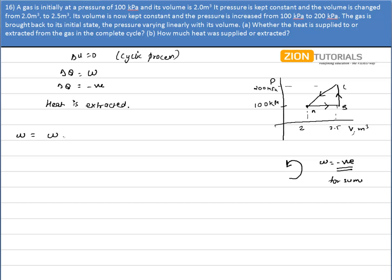That is equal to work done during the process AB plus work done during the process BC and work done during the process CA. So work done during the process AB is P delta V. So pressure is 100 kPa into change in volume is 0.5, plus work done during BC that is equal to 0 because volume is constant.